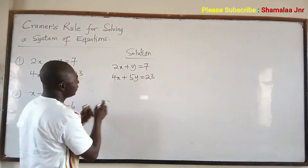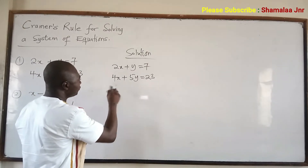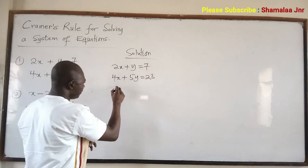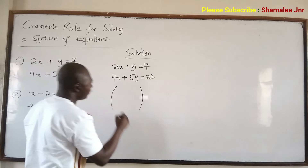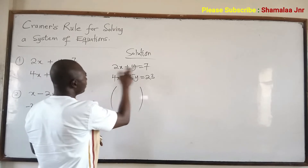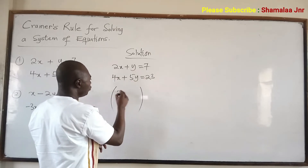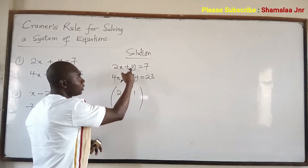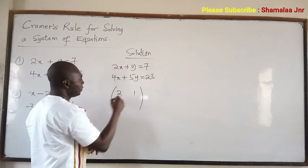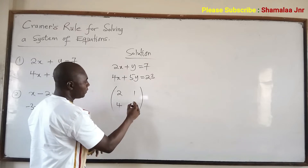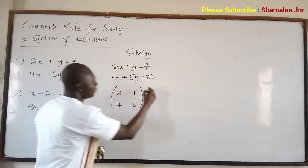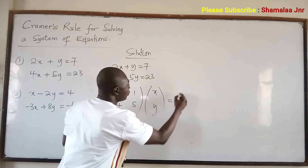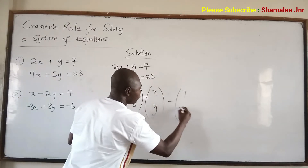When you are doing this, what you have to do is rewrite these equations as a matrix, using the coefficients of the variables. So the coefficients give us 2, 1 and 4, 5, times x and y, and this is equal to 7 and 23.